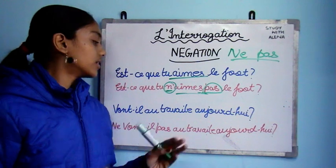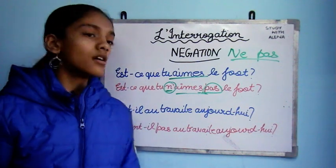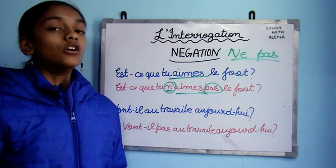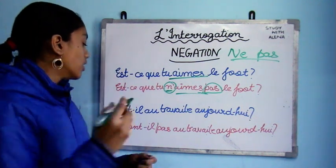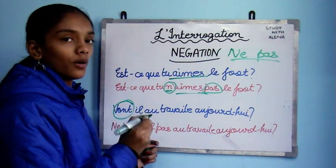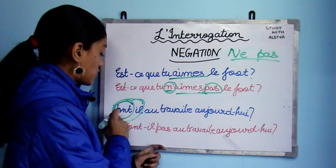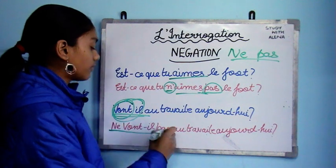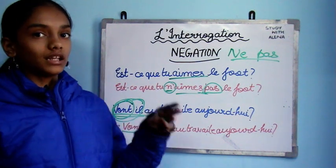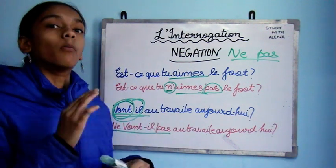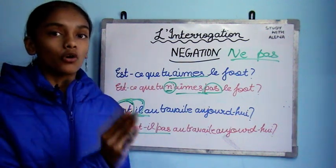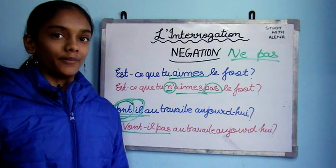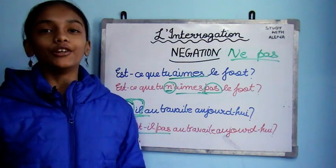What changes is in inversion negation. For example, 'vont-ils au travail au jeudi?' — here 'ne' and 'pas' wrap not just around the verb but around the entire inverted block. So it becomes 'ne vont-ils pas.' Similarly, 'mange-t-il du pain?' in negation becomes 'ne mange-t-il pas du pain?'